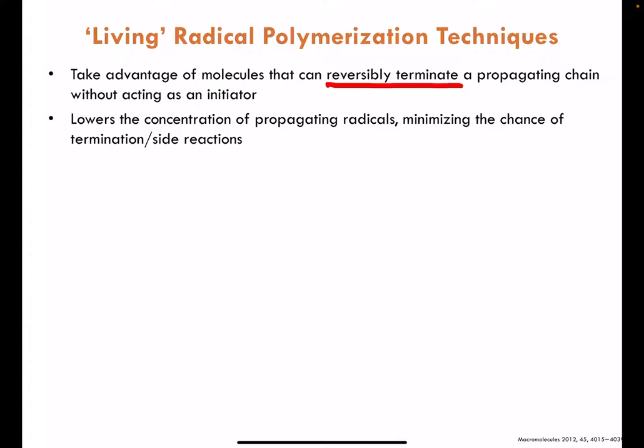This is effective because it lowers the overall concentration of propagating radicals, which minimizes the likelihood that they'll find each other and minimizes the chance of termination reactions. So if we can drop the concentration of radicals, we will have seldom encounters of active radicals with other active radicals for termination. This is how we can acquire a living-type condition for the polymerization.